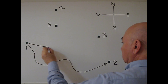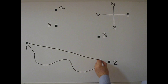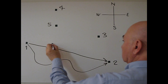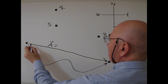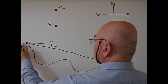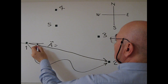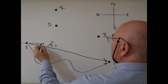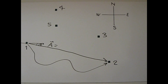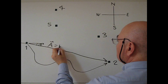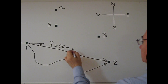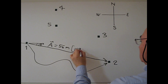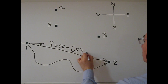I connect these points by a straight line. This is my displacement vector — let's call it vector A. I draw a parallel west-east line, and this angle is 15 degrees. So my displacement vector A has a magnitude of 56 meters, 15 degrees south of east.